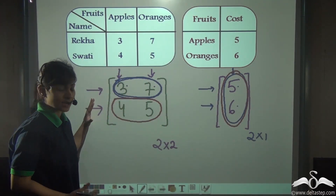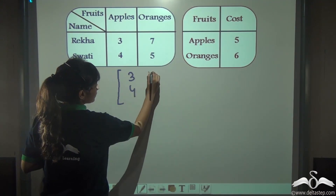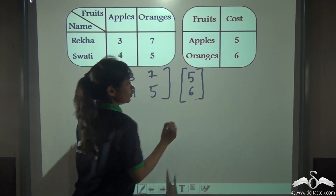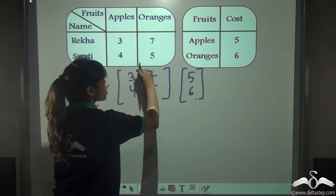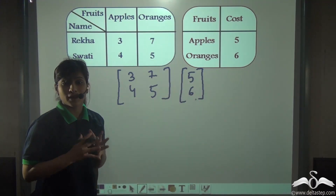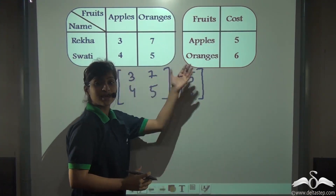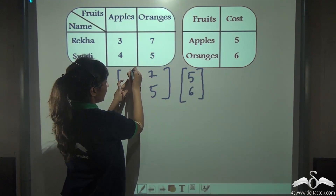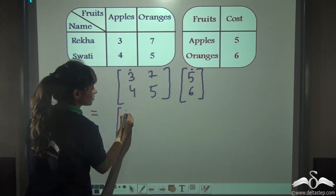Let us do this multiplication and then you will understand better. We multiply the matrix [3, 7; 4, 5] into the matrix [5; 6]. Always take the rows of the first matrix. Start by taking the first row and multiply it with the first column of the second matrix. Whenever we do multiplication of matrices, always remember: take the first row of the first matrix and the first column of the second matrix. So first, multiply the first element of the first matrix with the first element of the second matrix — that is 3 into 5.